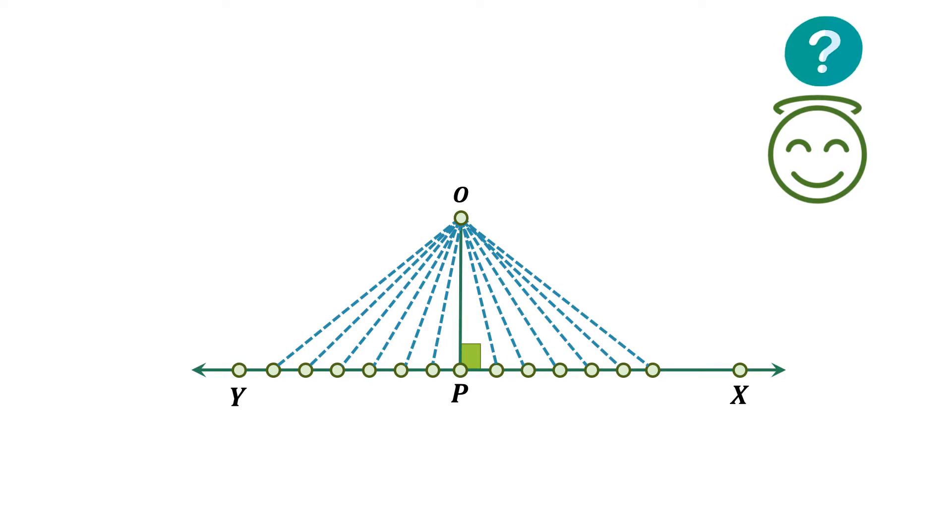In mathematics, the shortest distance between the point and the line is defined by perpendicular distance between point and the line. Hence, length of the line segment OP is the distance of the point O from line xy.